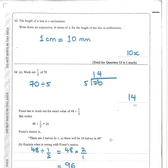Question 13: lots of people got this wrong. The line is X centimetres — write an expression in millimetres. If in doubt, put numbers in: 1 cm is 10 mm, 3 cm is 30 mm, 7 cm is 70 mm. You're multiplying by 10 each time. So if you have X centimetres, you have 10X millimetres.